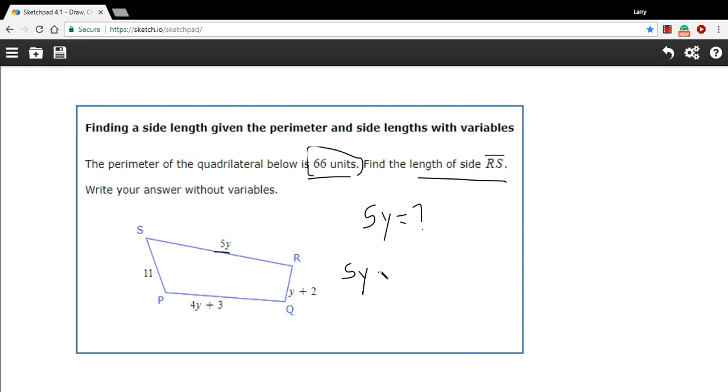So that would look like this: 5y plus y plus 2 plus 4y plus 3 plus 11. And that's going to equal the perimeter of the shape, that's 66.